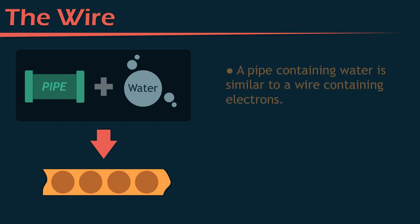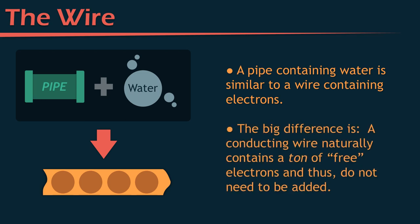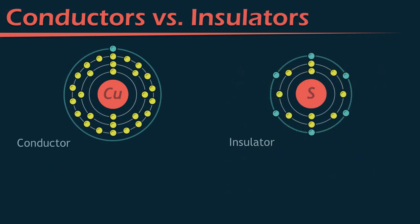A pipe containing water is similar to a wire containing electrons. In the hydraulic circuit we were interested in moving water around, but in an electric circuit we are interested in moving around electrons. The big difference is that a conducting wire naturally contains a ton of free electrons, and thus they do not need to be added to the wire. Most metals are conductors of electricity because metals, in general, have free electrons. Without free electrons, we basically cannot conduct electricity.